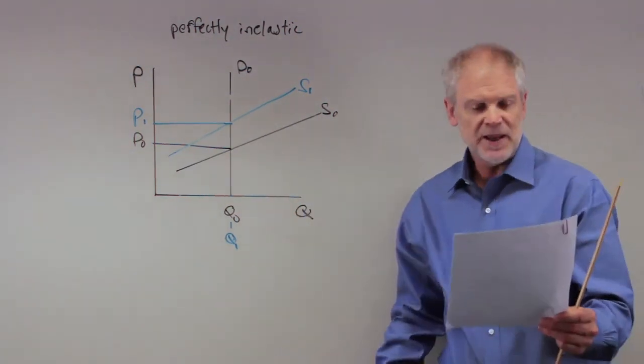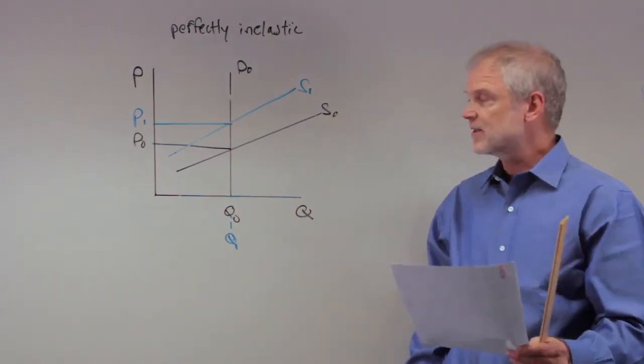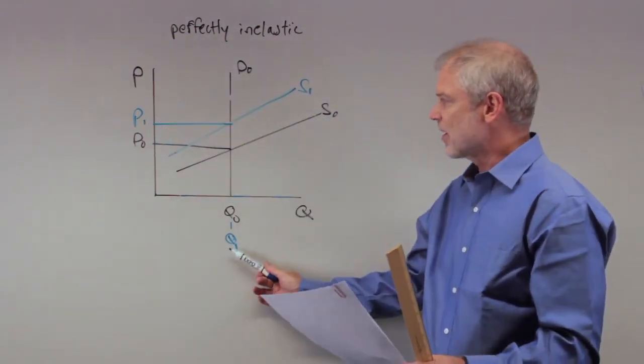B, the equilibrium price increases and equilibrium quantity is unchanged. Equilibrium price increases, equilibrium quantity is unchanged. It's going to be our answer folks, but let's just go on further.